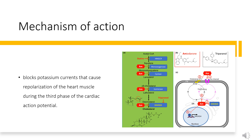Unique from other members of the Class III antiarrhythmic drug class, amiodarone also interferes with the functioning of beta-adrenergic receptors, sodium channels, and calcium channels. These actions can at times lead to undesirable effects such as hypotension, bradycardia, and torsades de pointes (TDP). In addition, amiodarone may increase activity of peroxisome proliferator-activated receptors, leading to steatogenic changes in the liver or other organs.